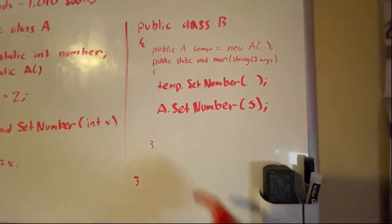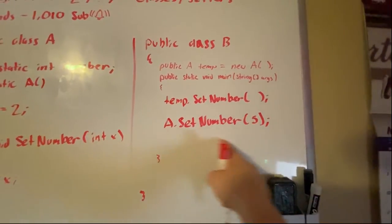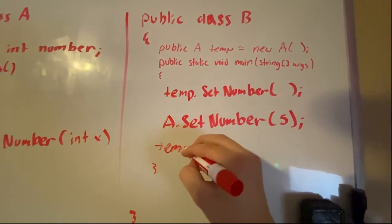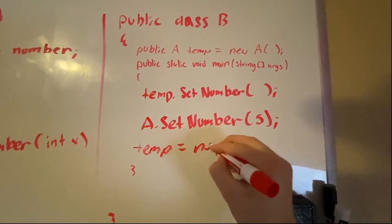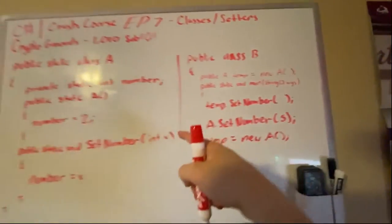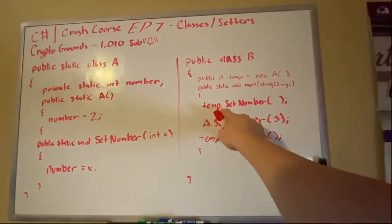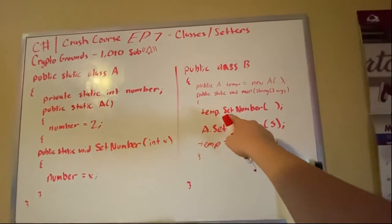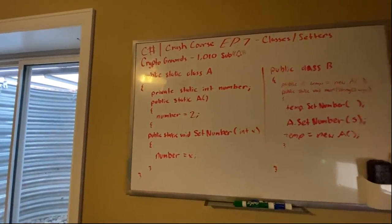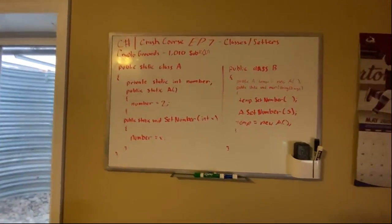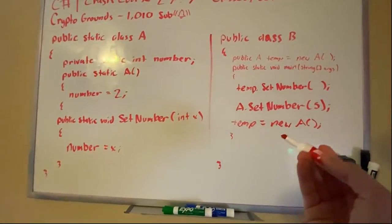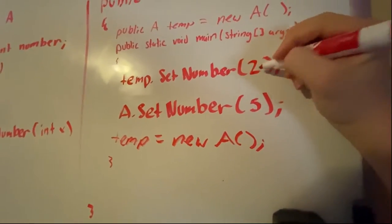However, if we change the static version to 5, and then we do temp equals new A, the number is going to be 5 instead of 2, because we basically just overrode this with a new version of the static method or the static class of A. Hopefully that makes sense.